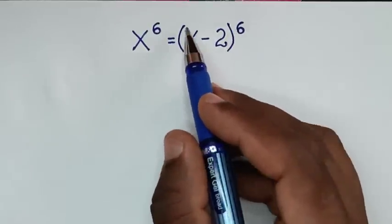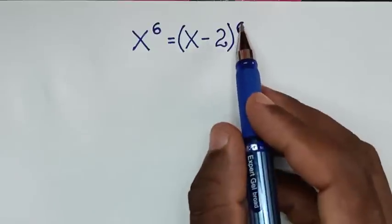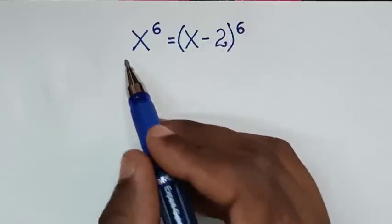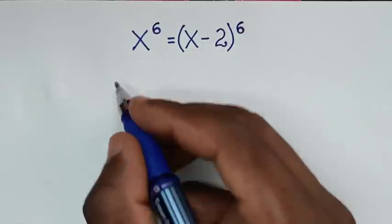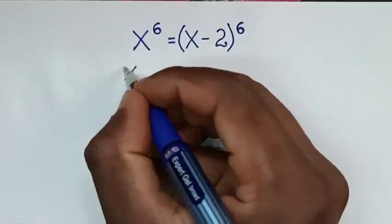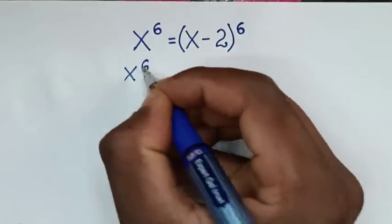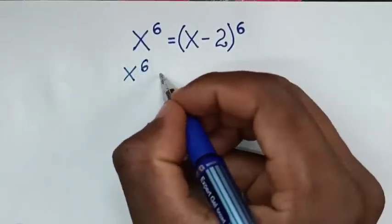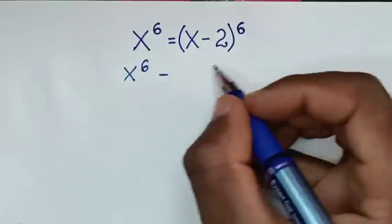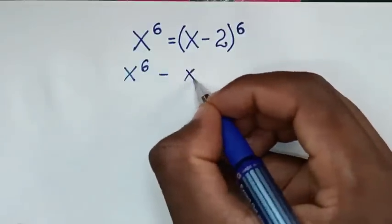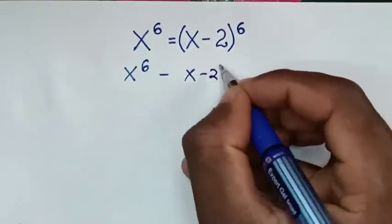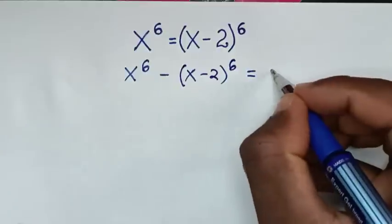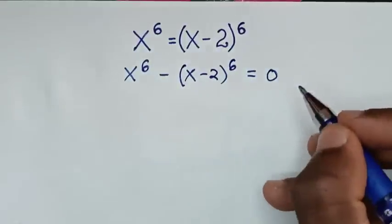In the first step, we take x minus 2 bracket to the power of 6 to the left side. So it will be x to the power of 6 minus x minus 2 bracket to the power of 6 is equal to 0.